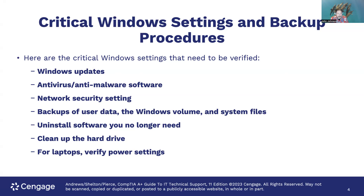For home use, you can set up automatic Windows updates without much worry. You should also set up antivirus and anti-malware software for protection, check your network security settings, back up user data, the Windows volume, and system files. Uninstall software you no longer need, as it can become a security liability. Clean up your hard drive, and for laptops verify your power settings.